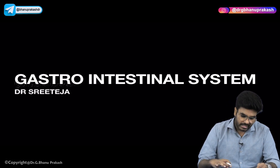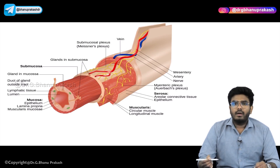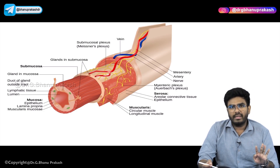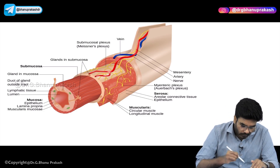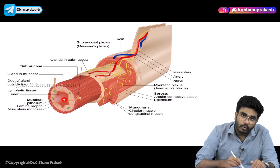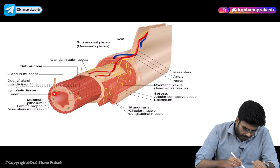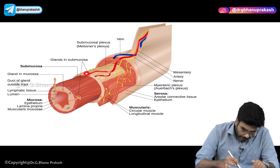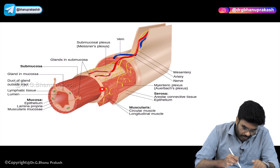What are the layers in the GIT? Your GIT is made up of four layers — four layers in the GI wall. The innermost layer, where the food passes through the lumen, is called the mucosa. Surrounding the mucosa, you have the submucosa.